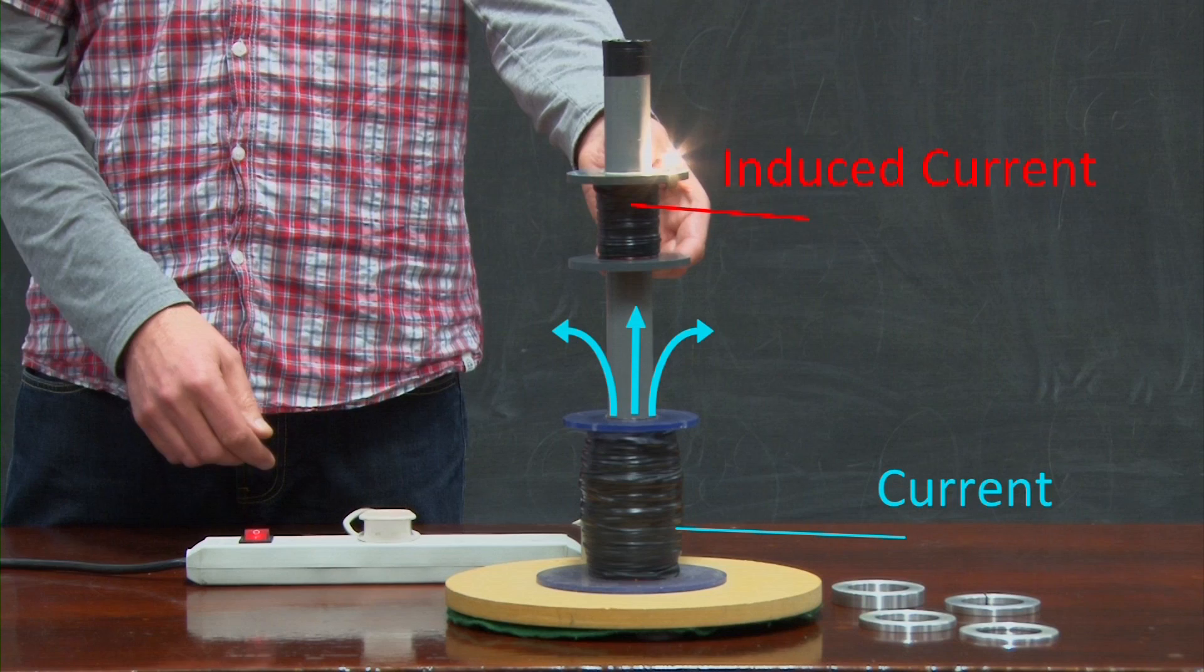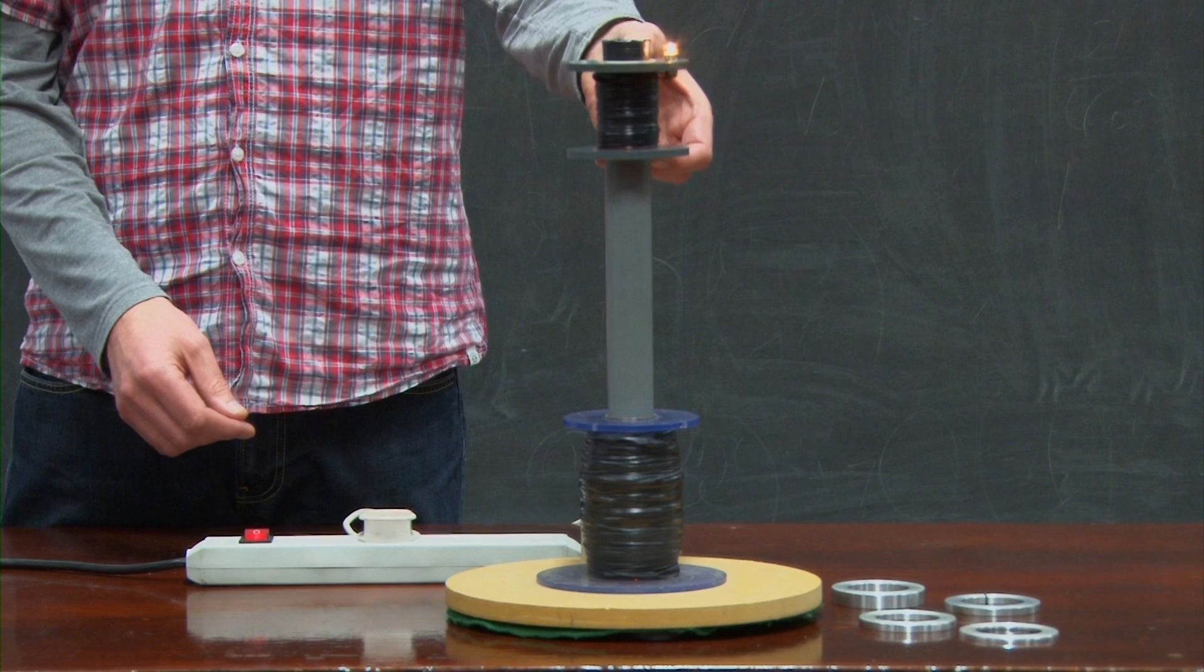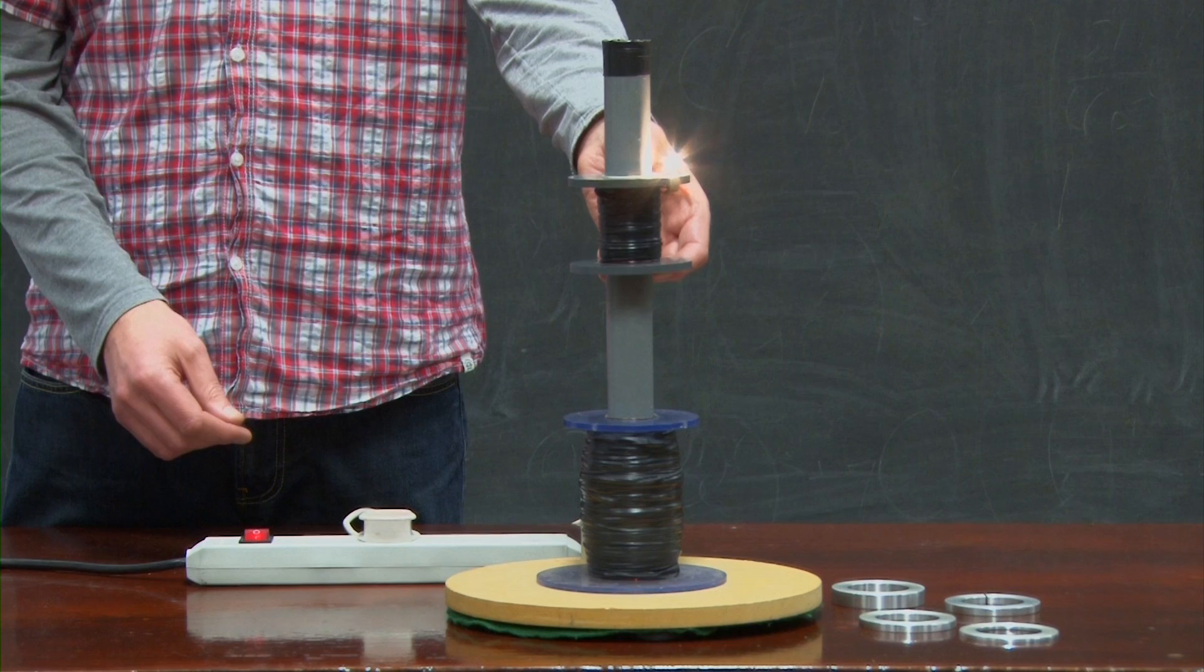In this demonstration, it might not be immediately obvious that the magnetic flux is changing. But remember, our coil is connected to an AC supply. So the current flowing through it is varying sinusoidally with a frequency